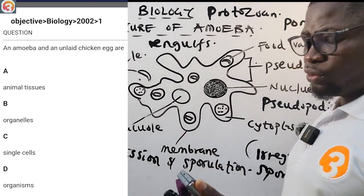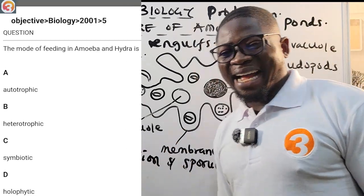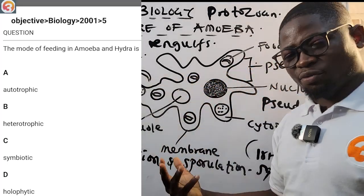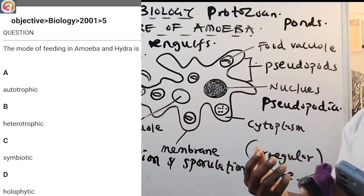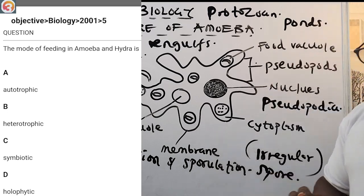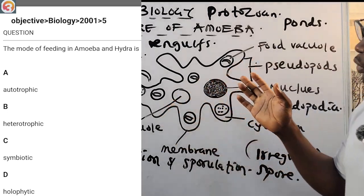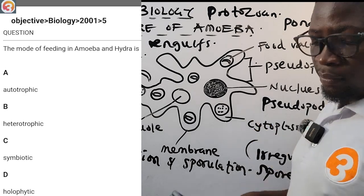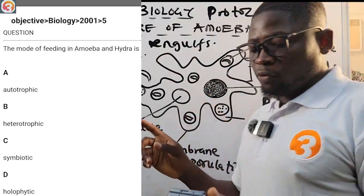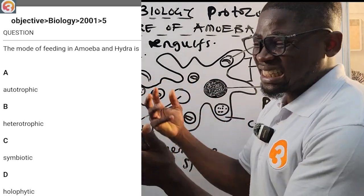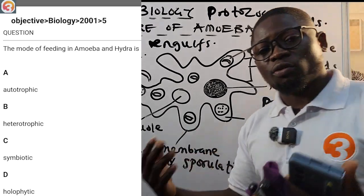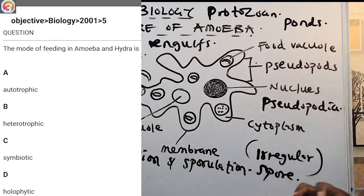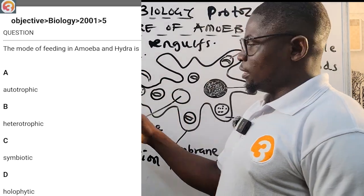2001 question number 5: 'The mode of feeding in amoeba and hydra.' The amoeba engulfs food particles by a process called phagocytosis, then digests them using enzymes. Because it engulfs food rather than producing its own, it is not autotrophic — it does not have chlorophyll. The amoeba is heterotrophic; it has a heterotrophic mode of nutrition.